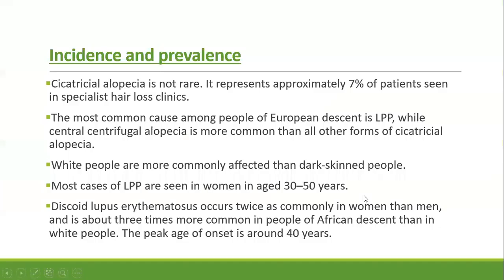Completing the classification, cicatricial alopecia is not a rare entity — it represents approximately 7% of patients seen in specialist hair clinics. The most common cause in Europeans is lichen planopilaris, while central centrifugal alopecia is more common in other populations. Most cases of lichen planopilaris are seen in women aged 30 to 50 years. DLE occurs twice as commonly in women as men and three times more commonly in people of African descent. Peak age of onset is around 40 years.